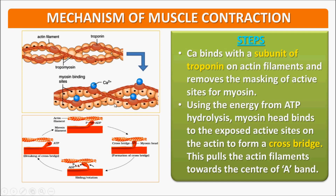The cross bridge pulls the actin filament towards the center of the A band (anisotropic band). This is the actin filament and this is the myosin filament, with the LMM and HMM components clearly shown. The myosin head is now attached to the actin filament, forming a cross bridge. This is how sliding or rotation takes place, and the globular head of myosin breaks the cross bridge. This process goes on and on, and in skeletal muscles it is under voluntary control.